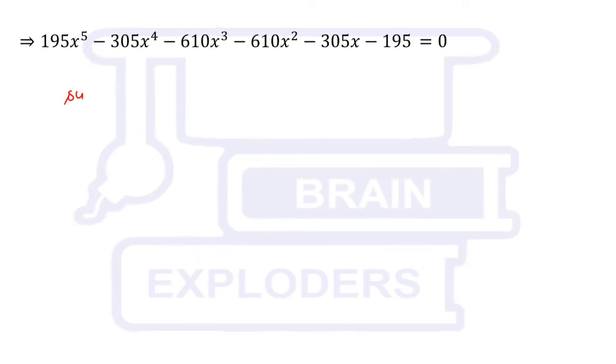We can write that sum of roots of this equation is equal to -305 over 195, and this is equal to 305 divided by 195, then it is equal to 61 over 39.